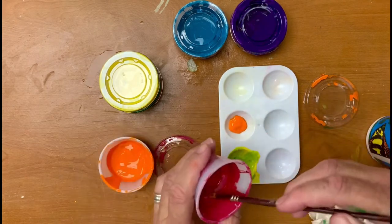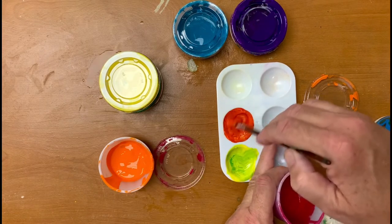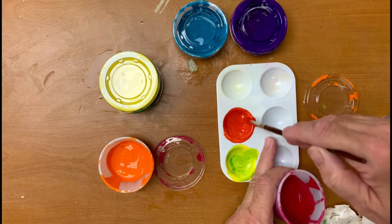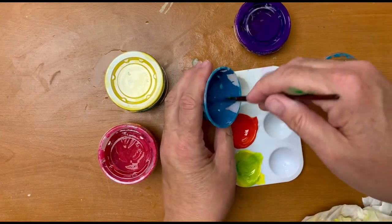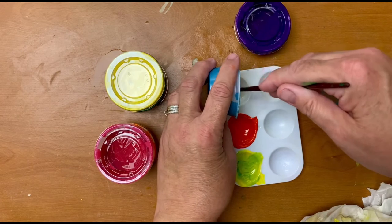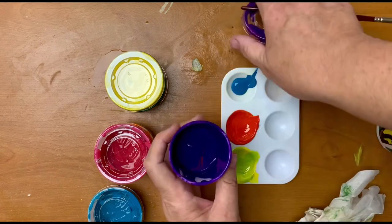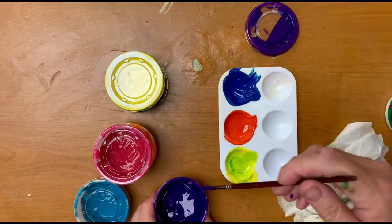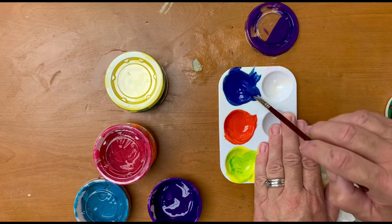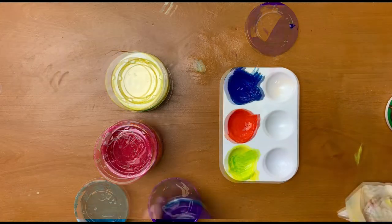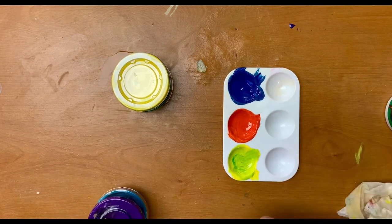And then add my red to it. And this time I'm going to start out with my blue and then add my violet. Now I have my blue violet, my red orange, and my yellow green. Time to paint in the last section.